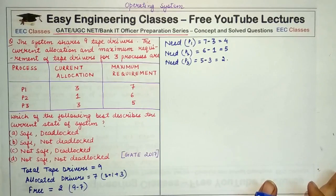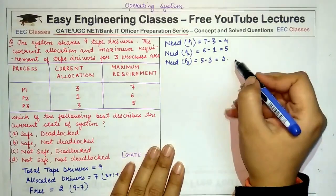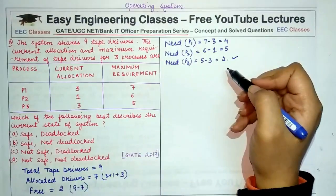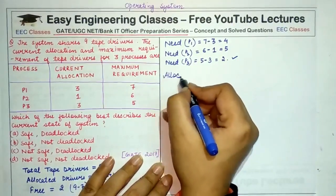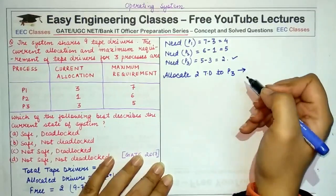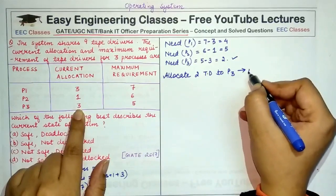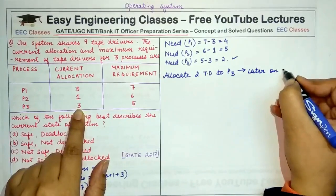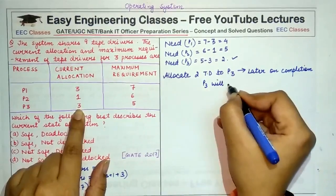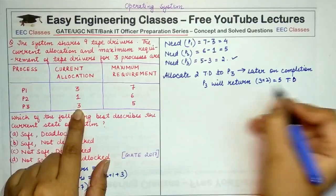With two free tape drivers we can allocate to a process needing two or fewer drivers. P3 needs exactly two, so we allocate two tape drivers to P3. After P3 completes, it returns its allocated three plus the two given, totalling five tape drivers returned. So after P3's completion, we have five free tape drivers.